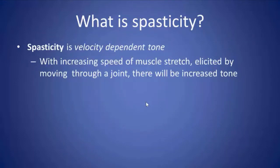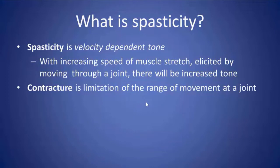Spasticity is velocity-dependent tone. As you move a limb through a range of motion with increasing speed of muscle stretch, there will be a resultant increase in tone and resistance to movement — frequently manifested as a catch, a hard stop followed by an ability to slowly extend the joint farther. Contracture, however, is limitation of range of motion that is not velocity-dependent; it is a limitation compared to the norm, with multiple possible causes.